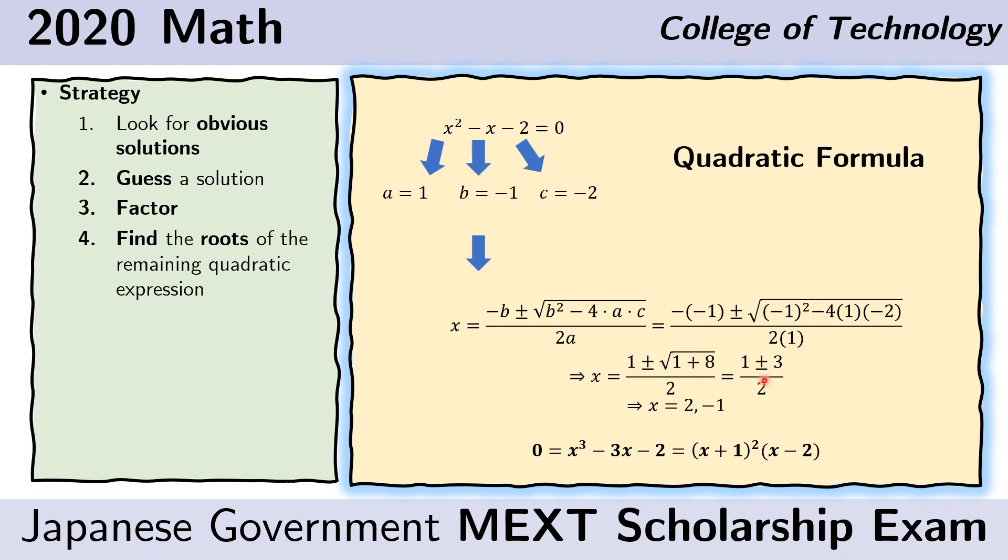And simplifying that, we get this and this. And that means that we have the possible values of x as 1 plus 3 over 2, which is just 2, and 1 minus 3 over 2, which is just negative 1. And again, that means that the original cubic equation can actually be expressed in terms of the factors x plus 1 squared times x minus 2. So the x minus 2 comes from this, the x plus 1 comes from this, and the other x plus 1 comes from the first step.